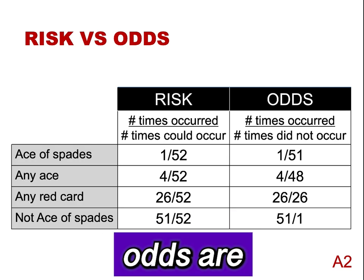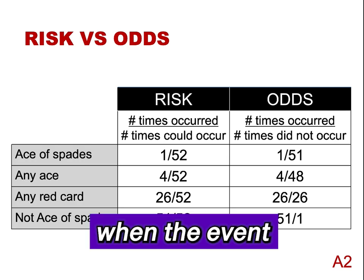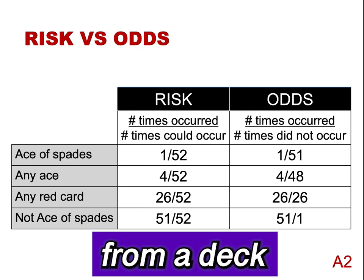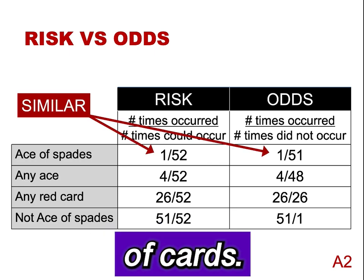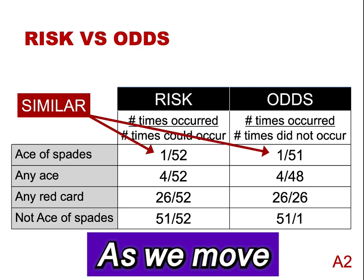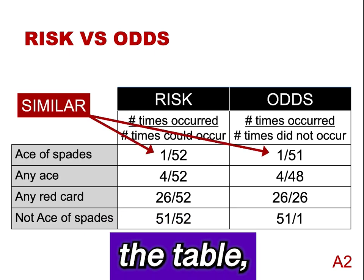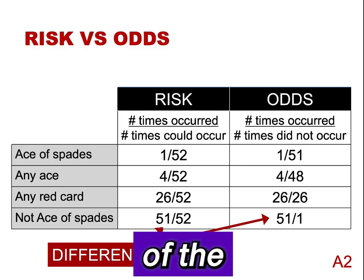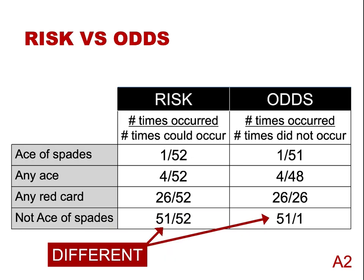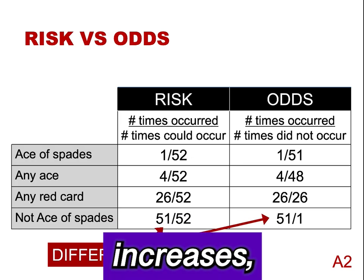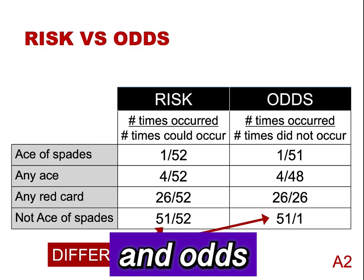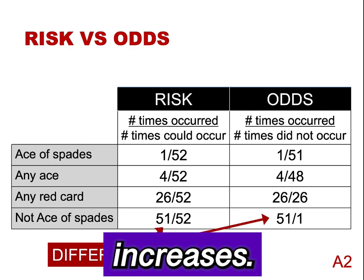Risk and odds are very similar when the event is rare, such as drawing the ace of spades from a deck of cards. As we move down the table, the likelihood of the event increases. As the likelihood of an event increases, the difference between risk and odds also increases.